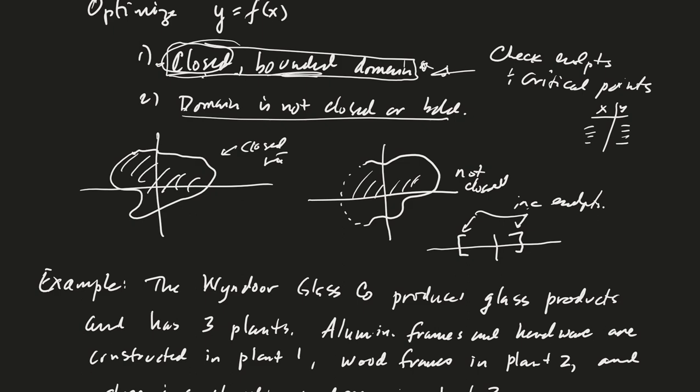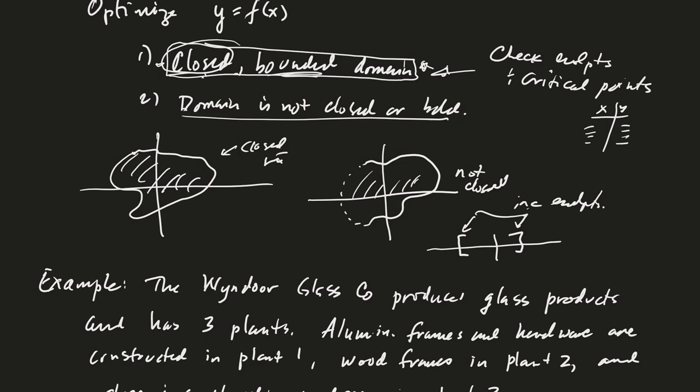Okay, I think I've got this written up now. Let's take a look. So the problem is we have a company called the Wind Door Glass Company. Wind Door Glass Company produces glass products and has three plants. Plant one does aluminum frames and hardware, they're constructed in plant one. Wood frames are in plant two, and then glass and construction, final construction, is done in plant three.